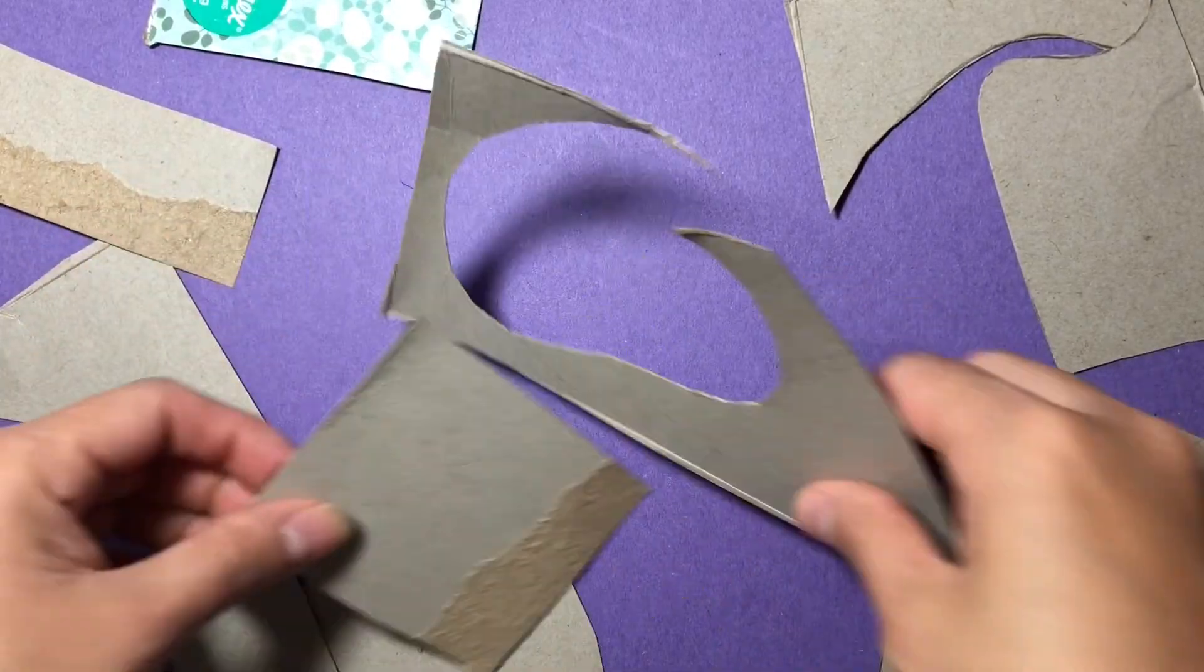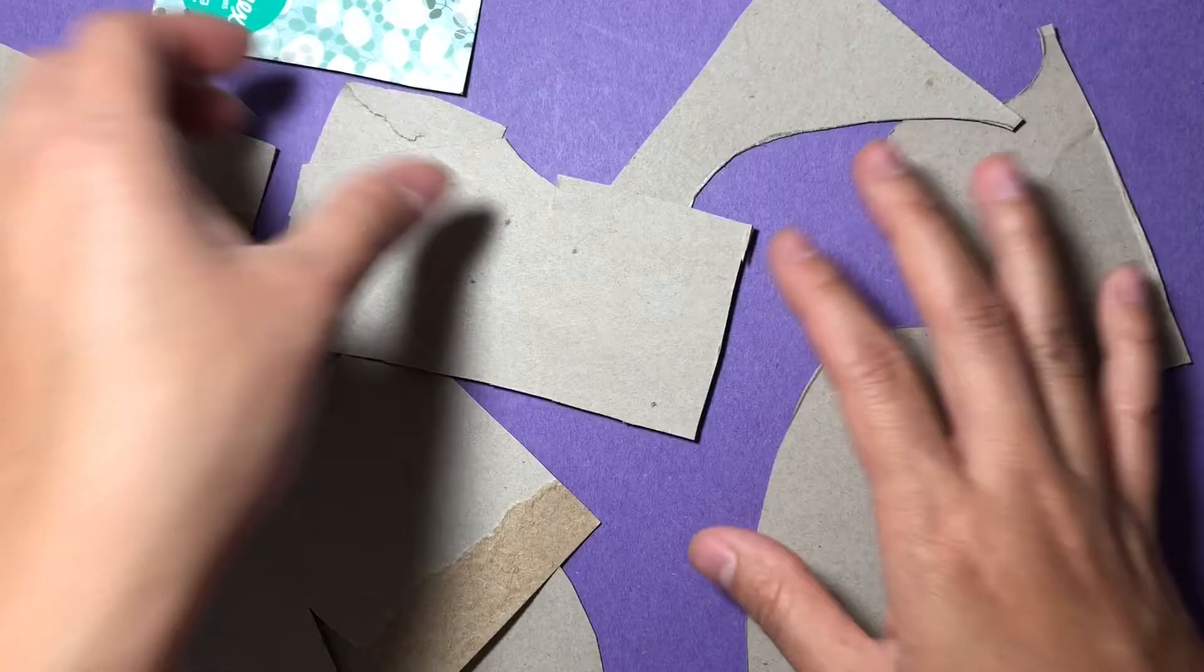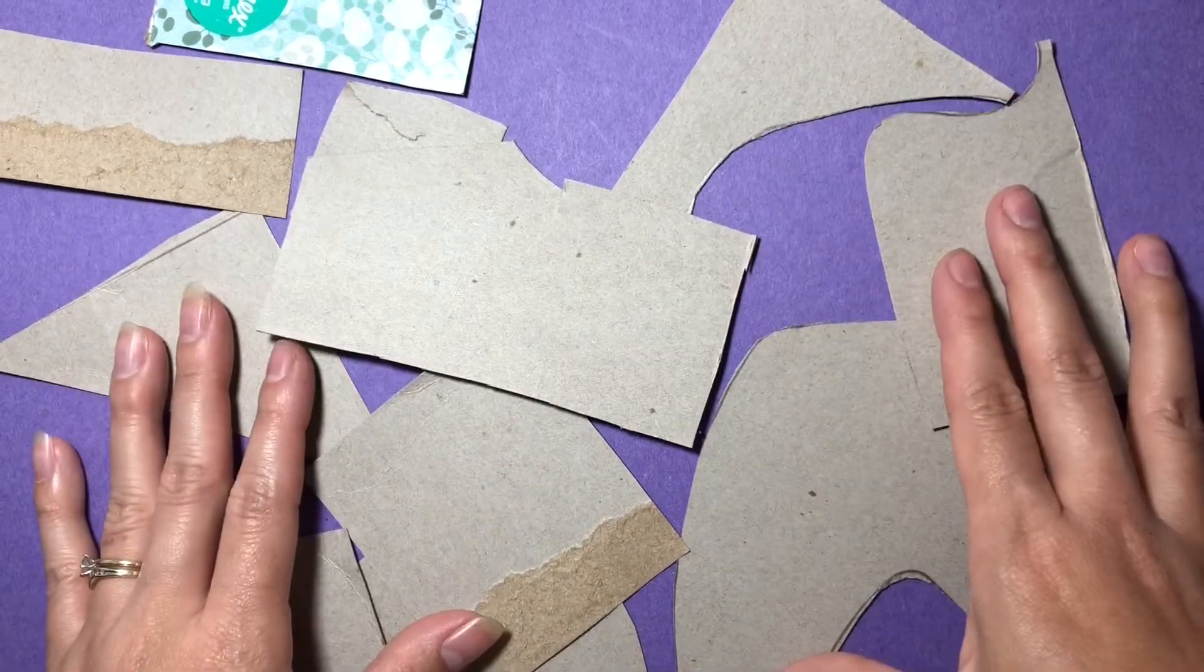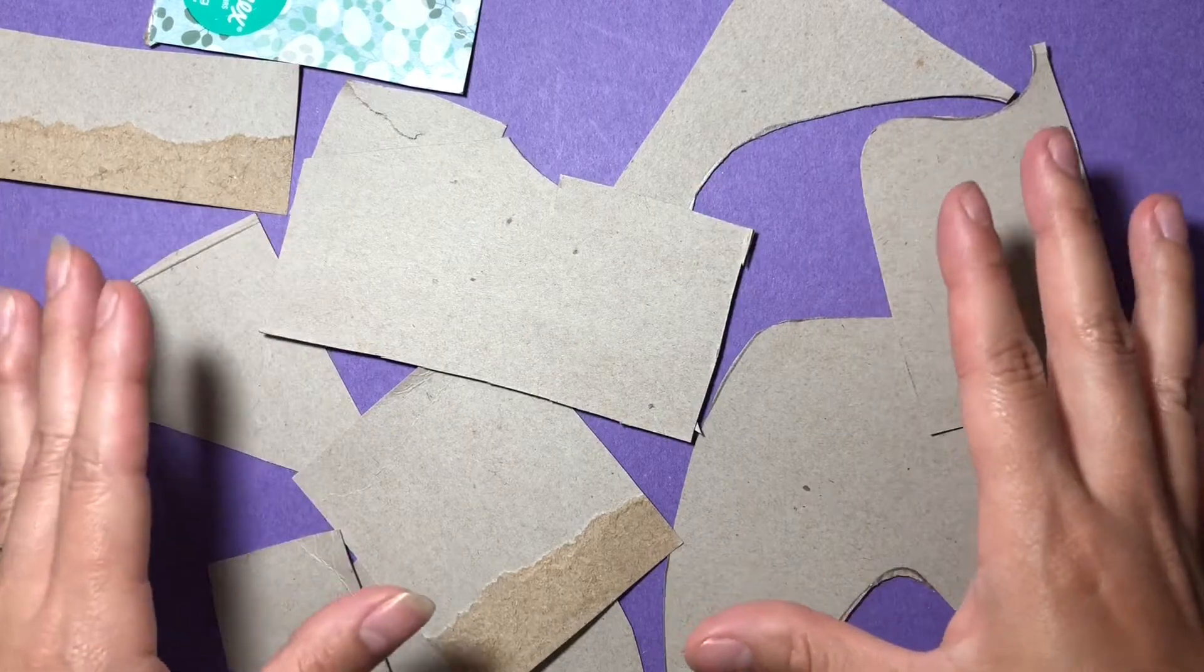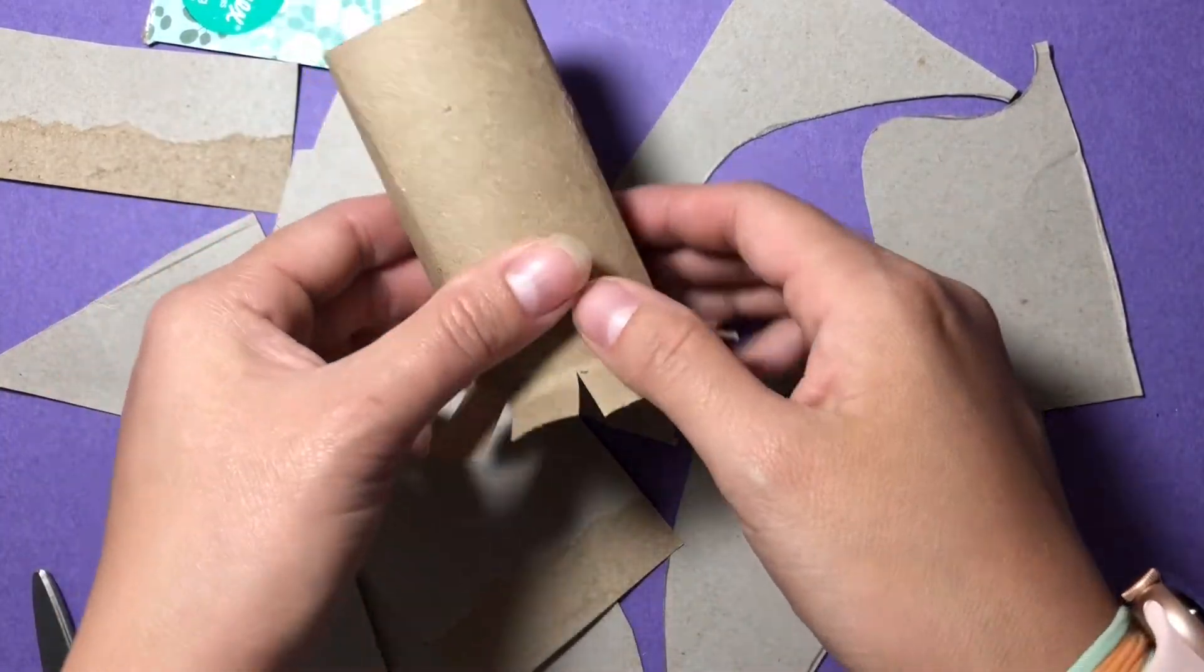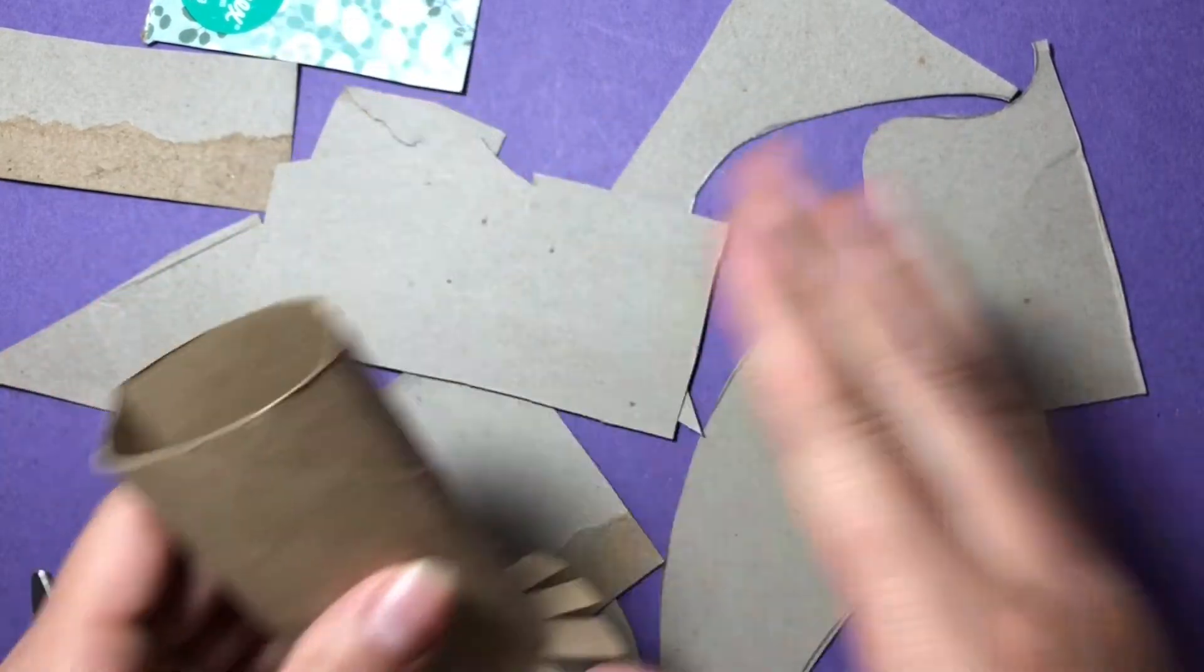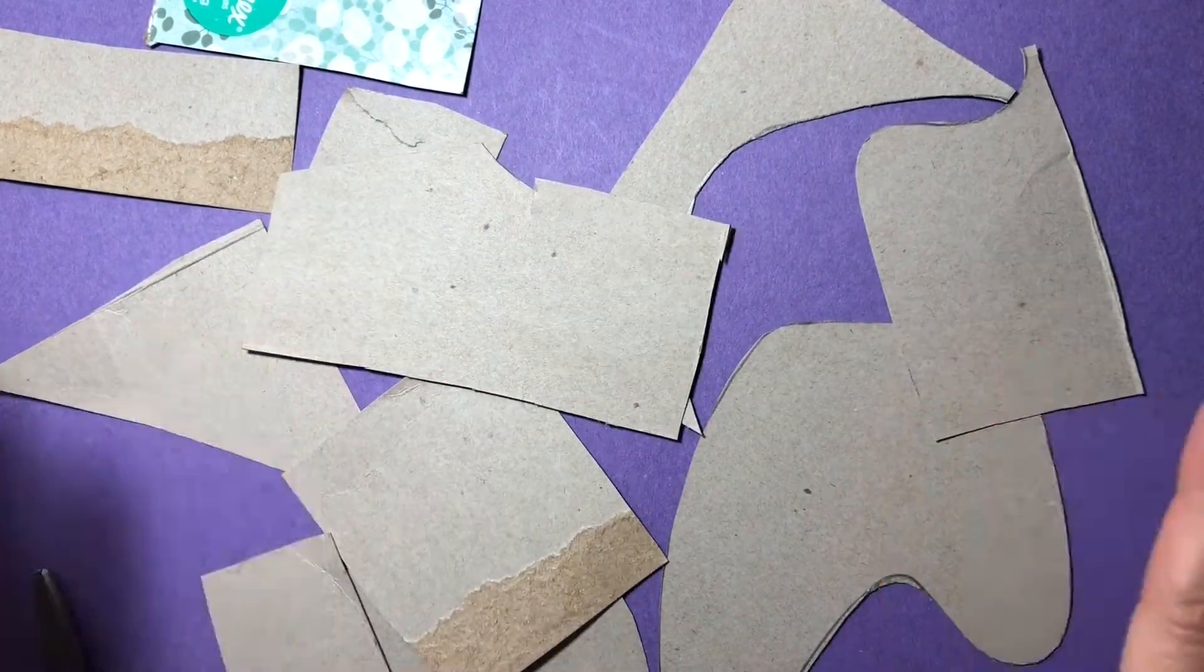Now that I have my pieces that I want to use to create with, I'm going to color them because you want to color before you put anything together. If you try to put it together and then color on top of it later, you might run into a problem where you're trying to flatten it out to color on it and then end up damaging your sculpture. So you want to color it before you assemble it.